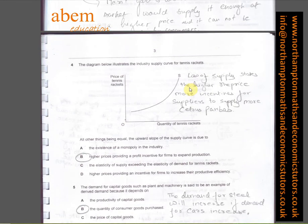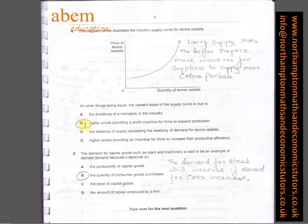Question number four is straightforward. The law of supply states the higher the price, the more incentives for suppliers to supply more. Ceteris paribus means all other factors are constant. That's why B is the answer.